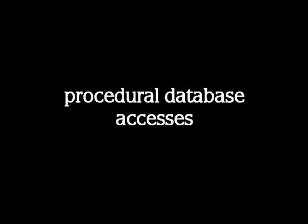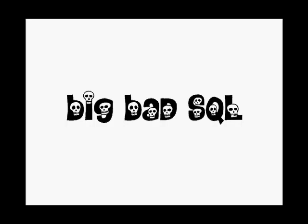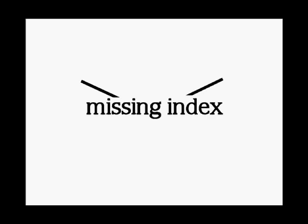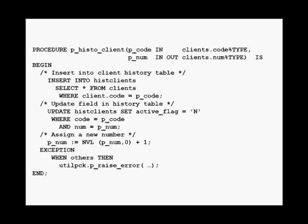Tried and true recipe number 4 is to abuse procedural database accesses. In my experience, it is no longer big bad SQL queries that are the biggest performance issue. Missing indexes are also, for the most part, a thing of the past. Actually, many tables I come across are over-indexed. Most performance issues today are with too many fast or moderately fast queries.